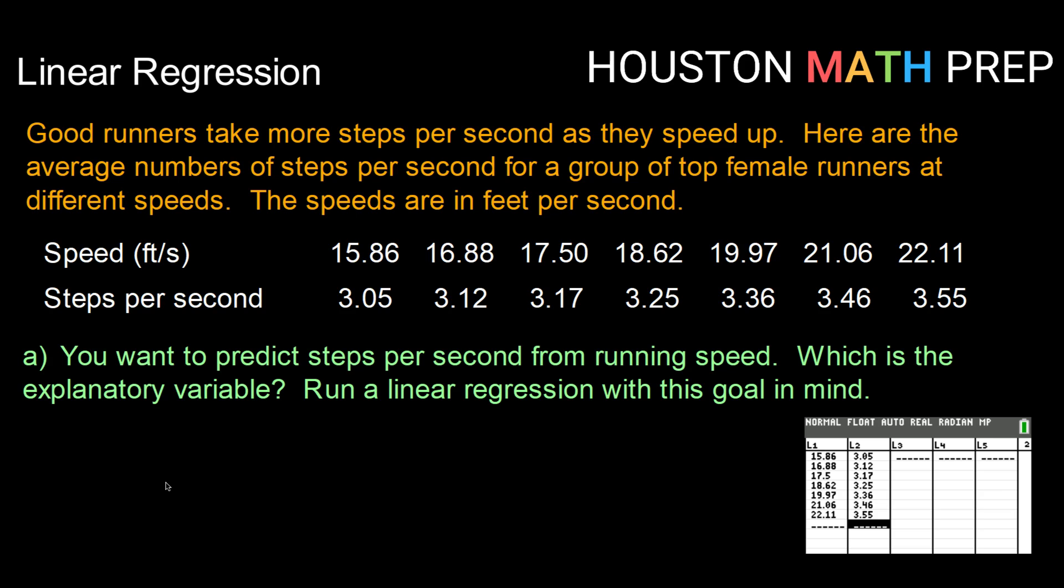So here's our setup. Good runners take more steps per second as they speed up. Here are the average number of steps per second for a group of top female runners at different speeds. The speeds are given in feet per second. So here we've got some data values. It looks like we've got seven.